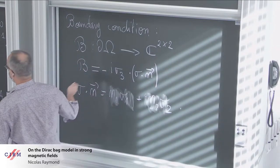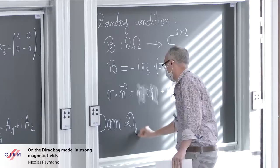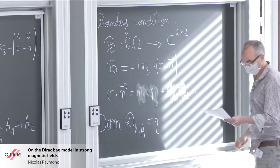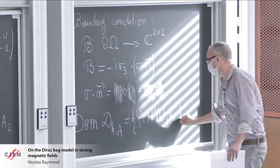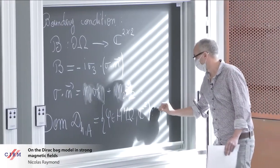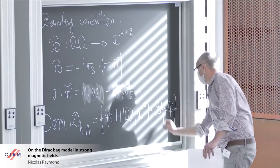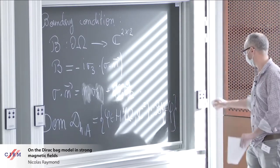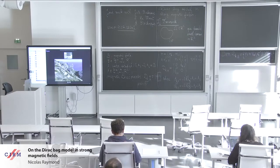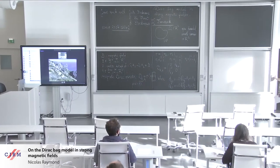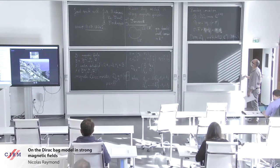What is the boundary condition? Instead of the boundary condition, I am going to describe the domain of this operator. The domain of D_H,A is a subset of H¹ of Omega, valued in C², with the condition that B phi equals phi.